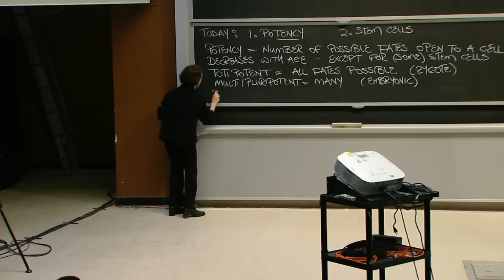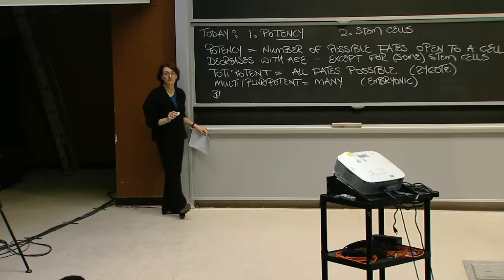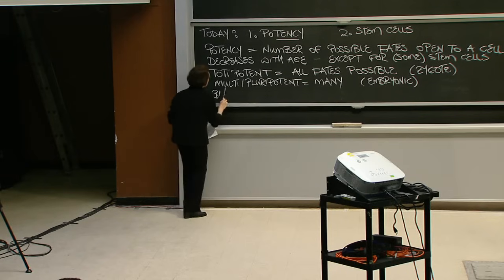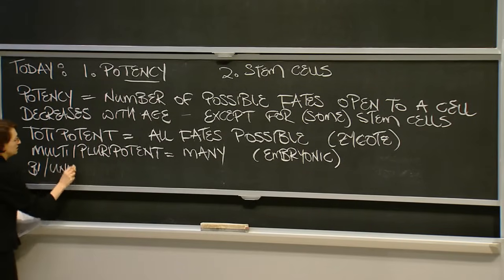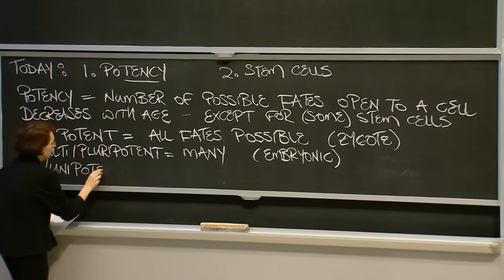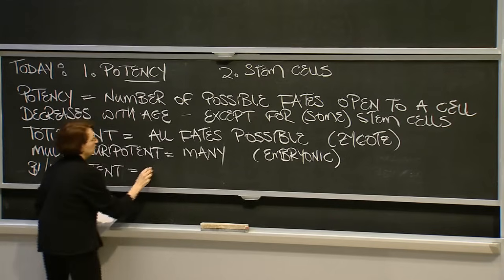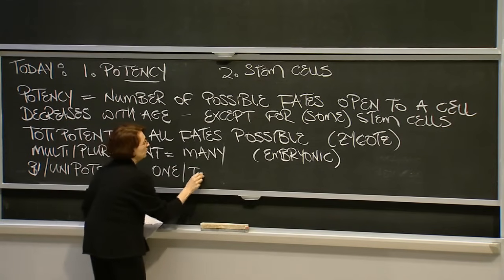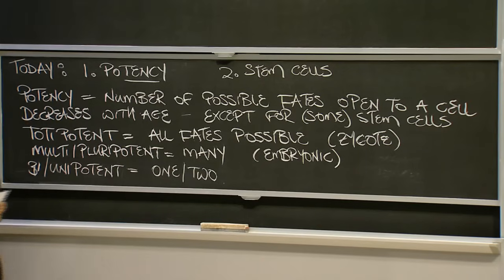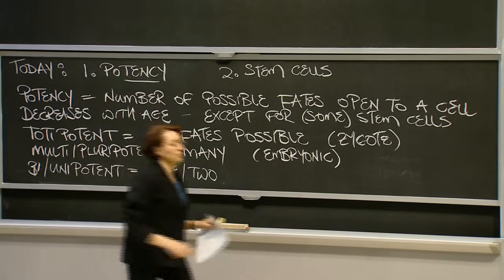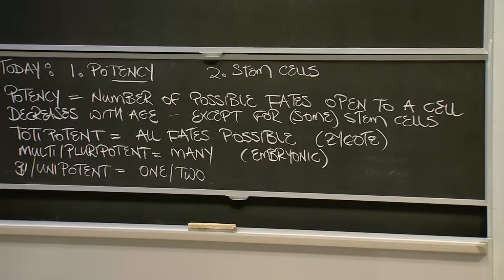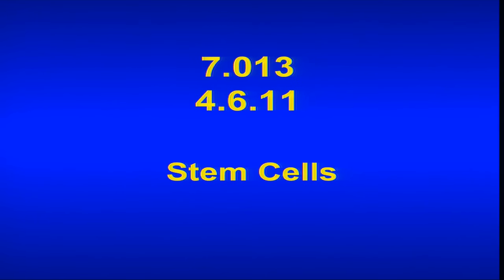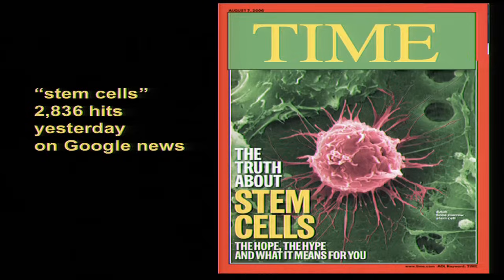As cell fate restriction continues, cells can become bipotent or unipotent, whereby only one or just two fates are open to them. Taking this concept, let's now start the lecture about stem cells.